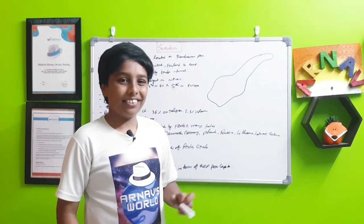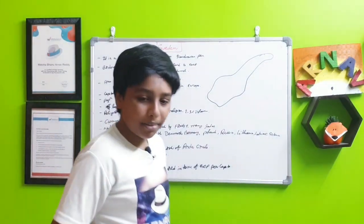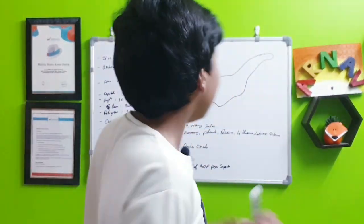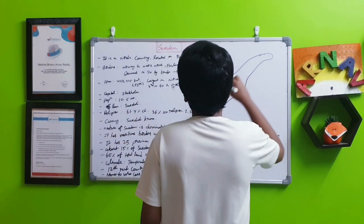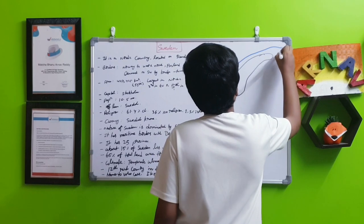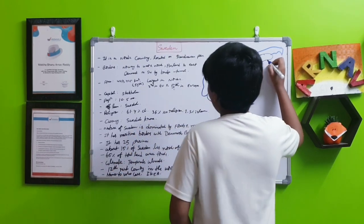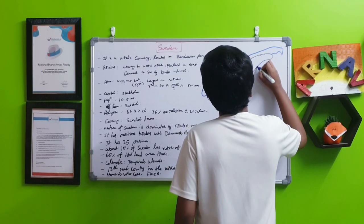The bordering nations of Sweden include: to the western north there is Norway, which goes like this. It even borders Russia, and in the east it has a border with Finland.